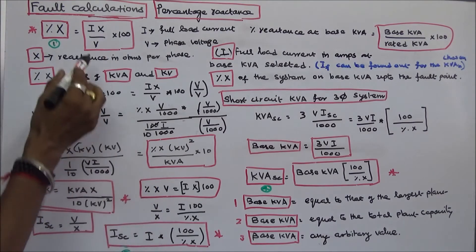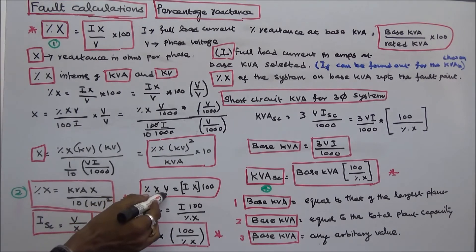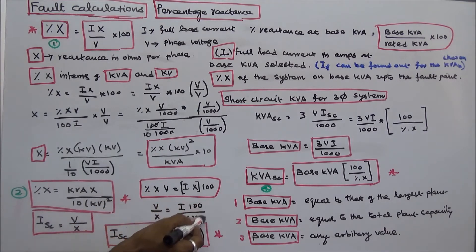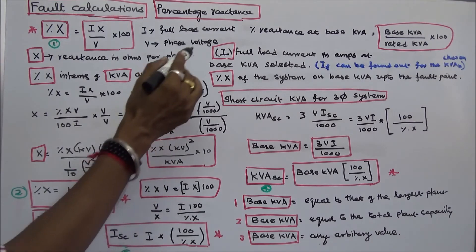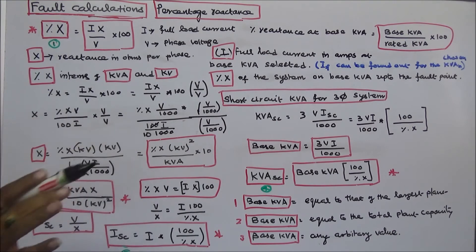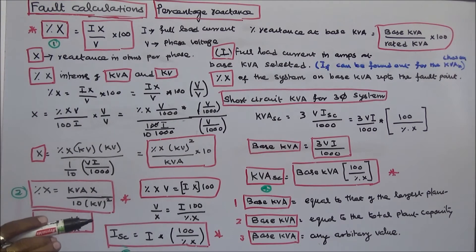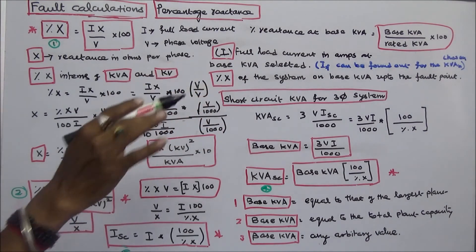From the percentage X formula: percentage X times V equals I times X times 100, so V divided by X equals I times 100 divided by percentage X. Therefore, short circuit current ISC equals I times 100 divided by percentage X, where I is the full load current in amps at the base KVA selected.